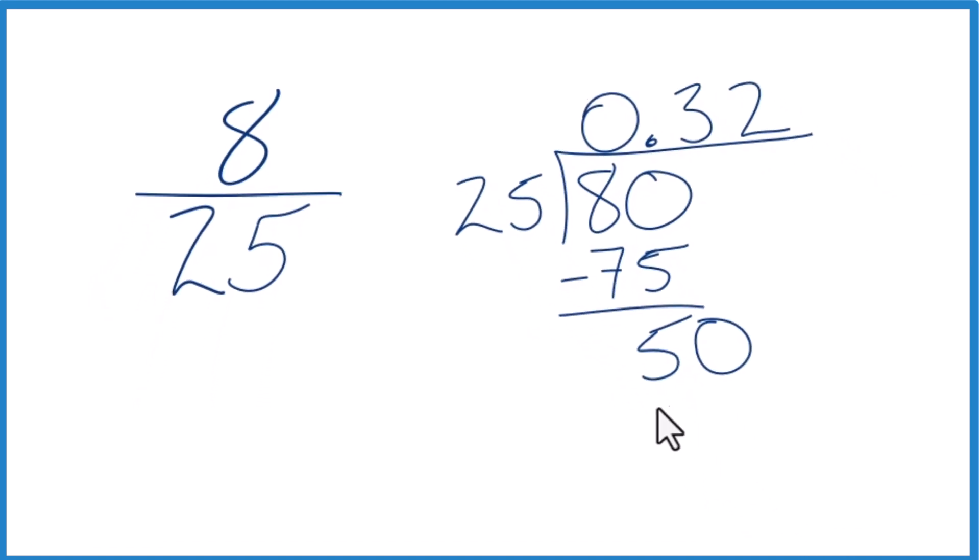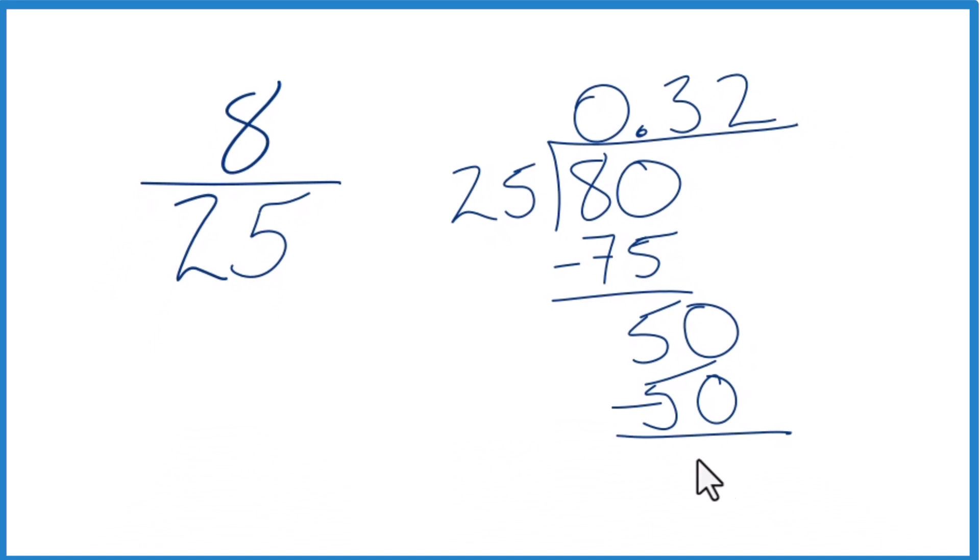Because now 2 times 25, that's 50. Subtract, we get 0, no remainder.